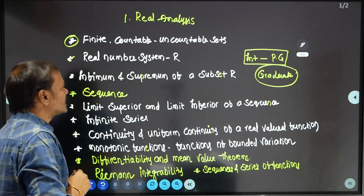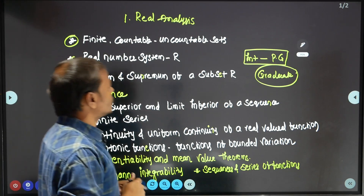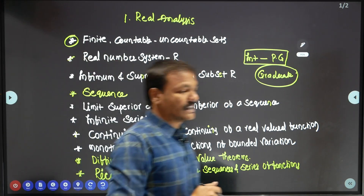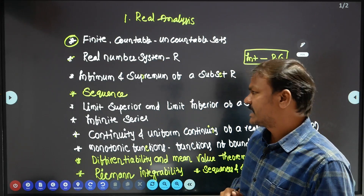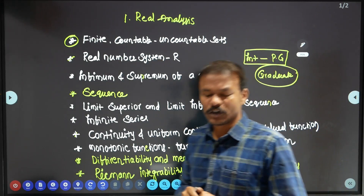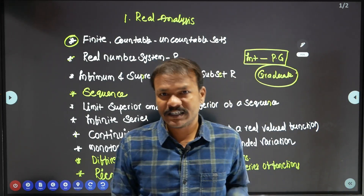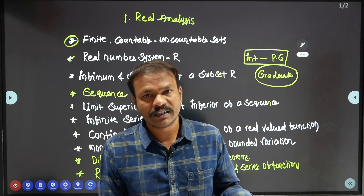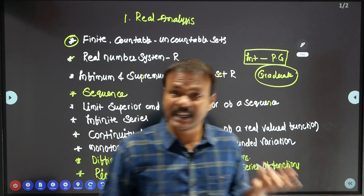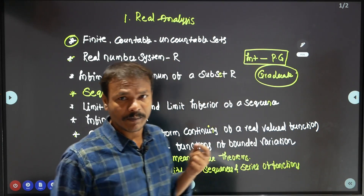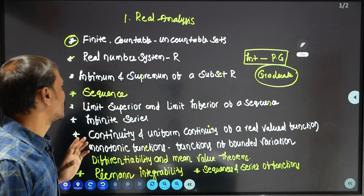After sets, we study the real number system, infimum and supremum of subsets, and sequences. Sequences can be divergent, convergent, bounded convergent, or bounded divergent. We will analyze each of these different types.